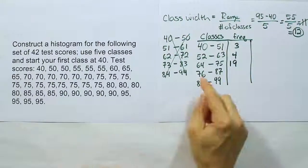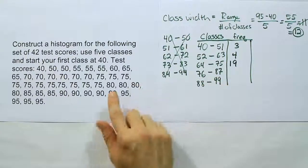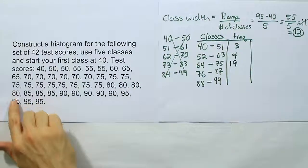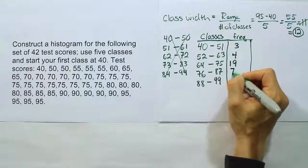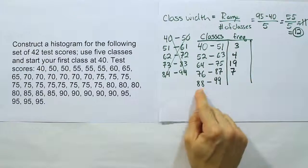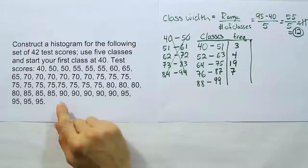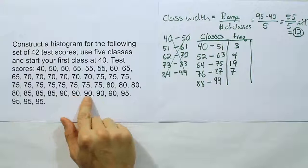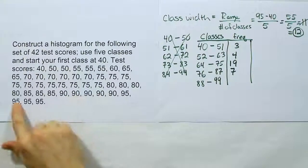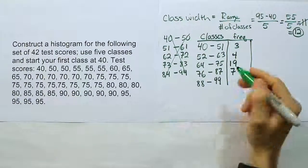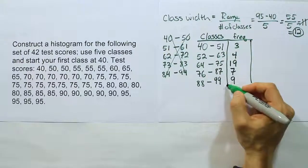How about the next one from 76 to 87? Seven numbers fall into that category. And how many fall into the 88 to 99 range? I count 9. And there it is. Those are all our numbers.